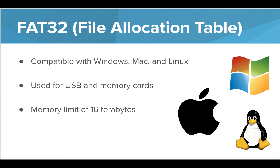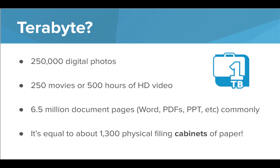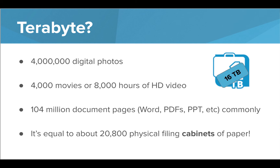FAT32, or File Allocation Table, is unique because it's compatible with all three major operating systems. It's commonly used for USB drives and memory cards and has a limit on its memory at 16 terabytes. One terabyte would be equal to about 1,300 physical filing cabinets of paper. You could also store 250,000 photos, 250 movies, or 6.5 million document pages. So with a storage capacity of 16 terabytes, an FAT32 system can store a ton of data, like 4 million photos or 4,000 movies.